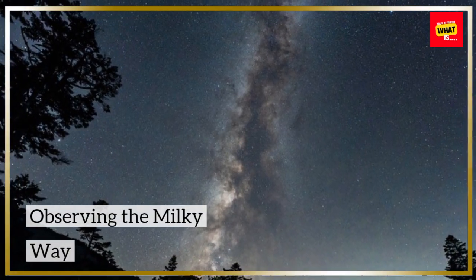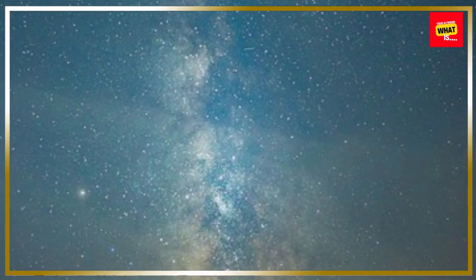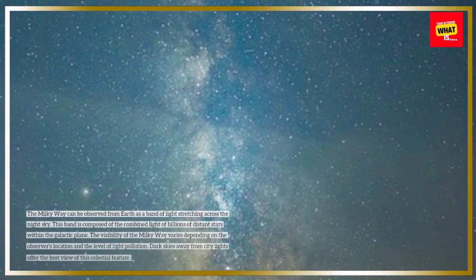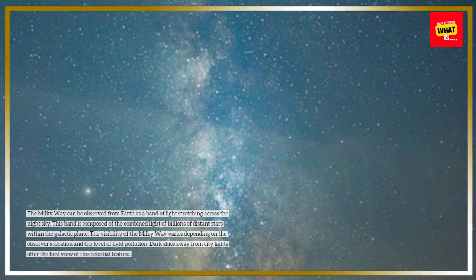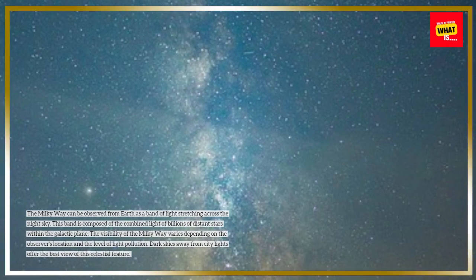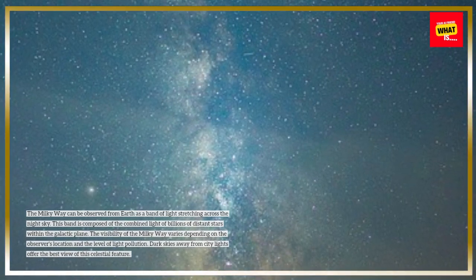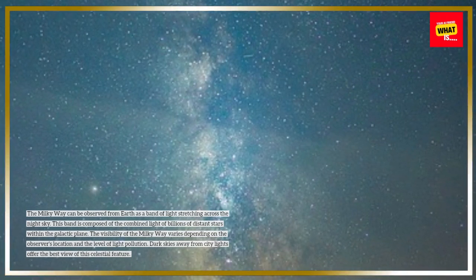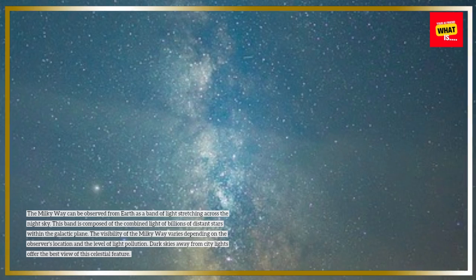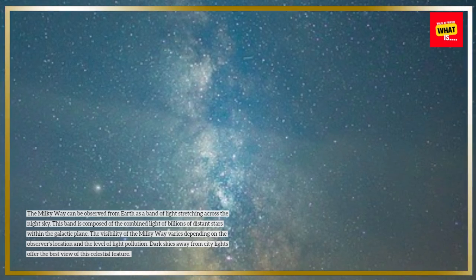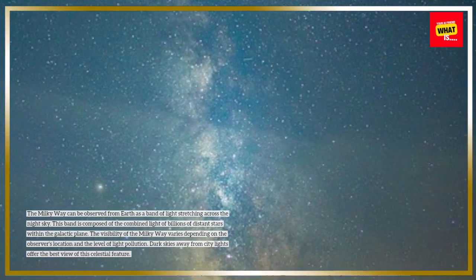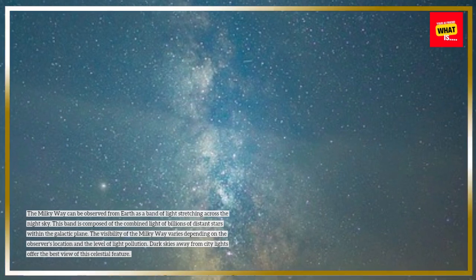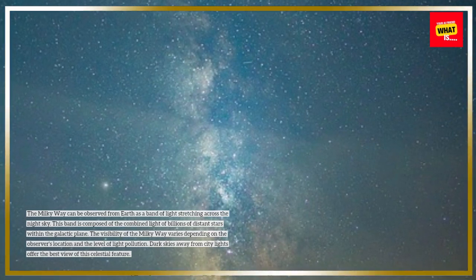Observing the Milky Way. The Milky Way can be observed from Earth as a band of light stretching across the night sky. This band is composed of the combined light of billions of distant stars within the galactic plane. The visibility of the Milky Way varies depending on the observer's location and the level of light pollution. Dark skies away from city lights offer the best view of this celestial feature.